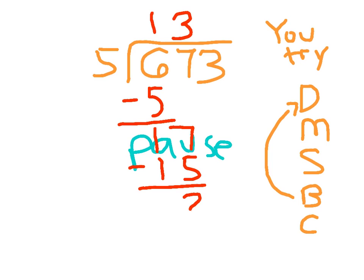Seventeen minus fifteen is two. And then at this point, you still have another number to bring down. We bring down the three right next to the two there. Does your work look okay so far?